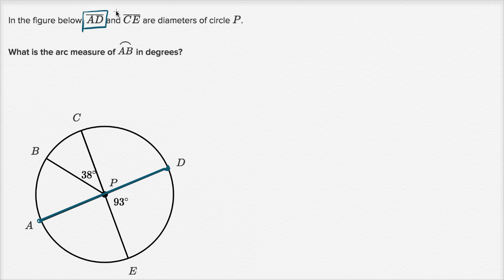So let me draw CE. So CE is, we're going to connect points C and E. These are diameters, so they go straight. So those are both diameters of the circle.